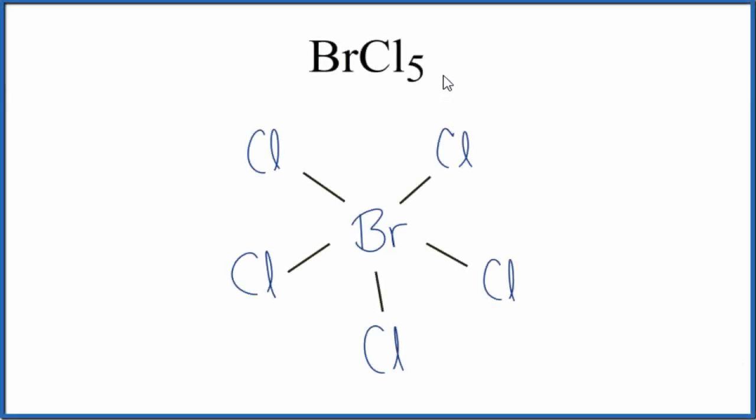In this video, we'll write the Lewis structure for BrCl5. This is bromine pentachloride. So for bromine pentachloride to write the Lewis structure, we need to count up the valence electrons.